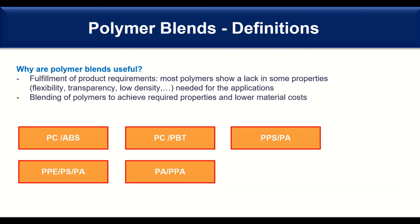You can also blend polyamide with high performance polyamide to achieve better heat resistance. And also when you look for materials for metal abrasion applications where aliphatic nylon is not enough anymore, then you can go to such a blend where you have already semi-aromatic polyamide.